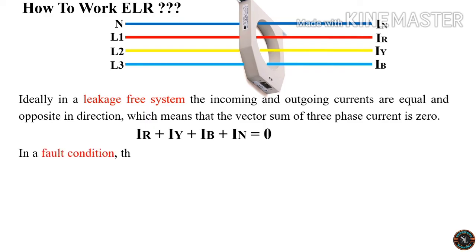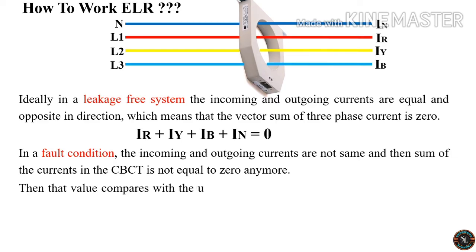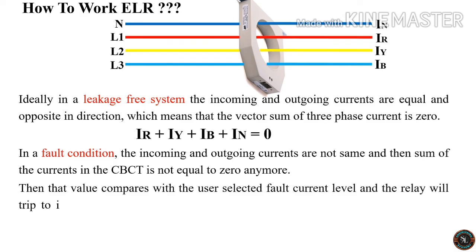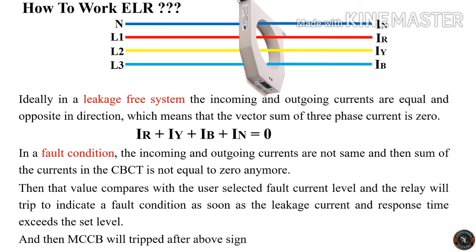In a fault condition, the incoming and outgoing currents are not the same, and the sum of the currents in the CBCT is no longer equal to zero. That value is then compared with the user-selected fault current level, and the relay will trip to indicate a fault condition as soon as the leakage current and response time exceed the set level. The MCCB will then trip after the signal is passed to the shunt coil.